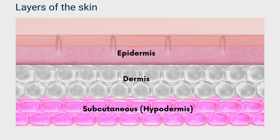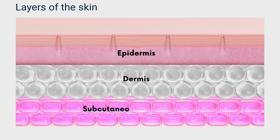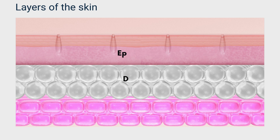The subcutaneous tissue, or hypodermis, is the deepest layer of the skin and is mainly composed of fat cells called adipocytes. The hypodermis serves as insulation and padding for the body, and it also helps anchor the skin to the underlying structures like muscles and bones. These layers work together to protect the body, regulate temperature, and provide sensation.